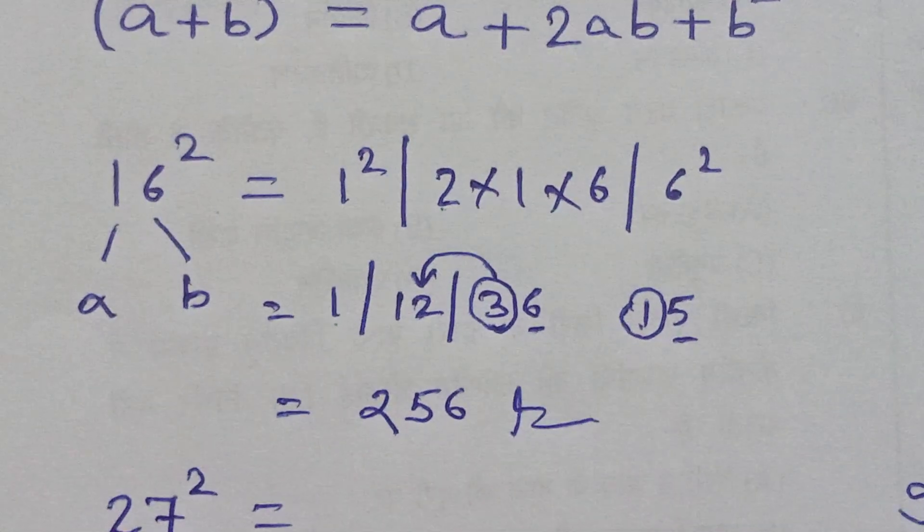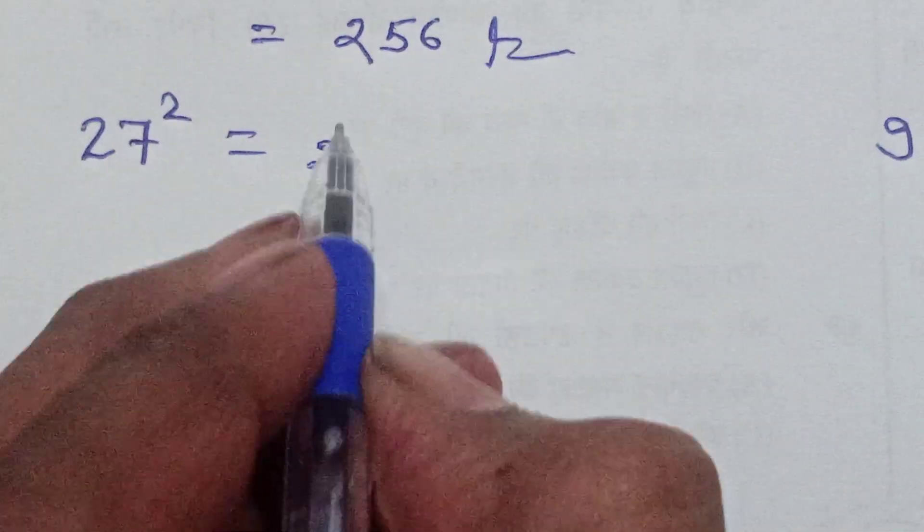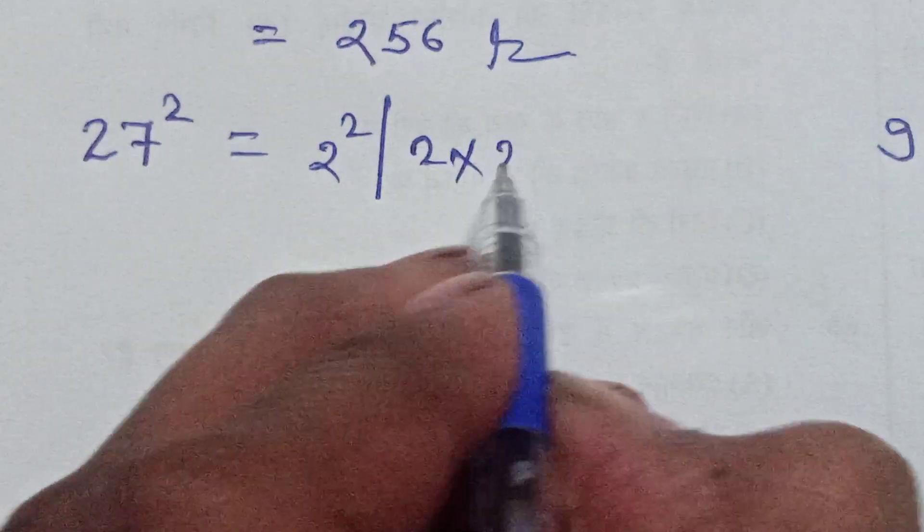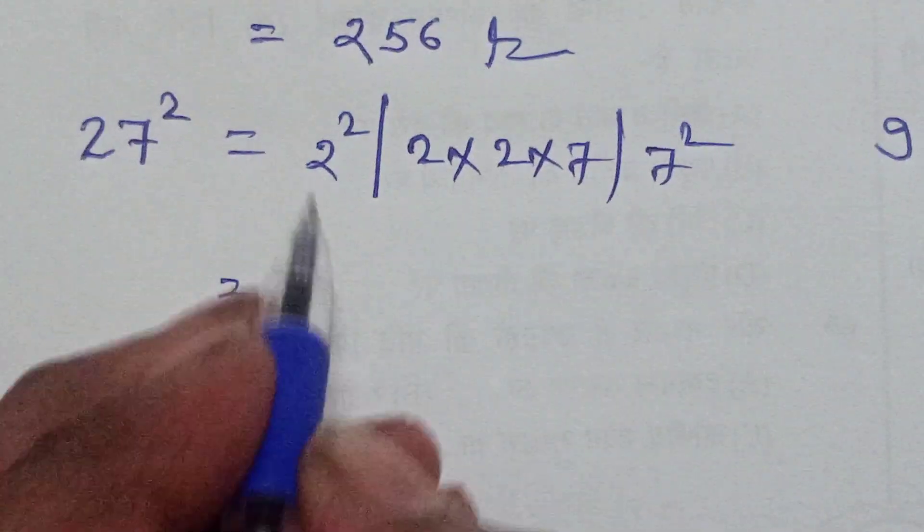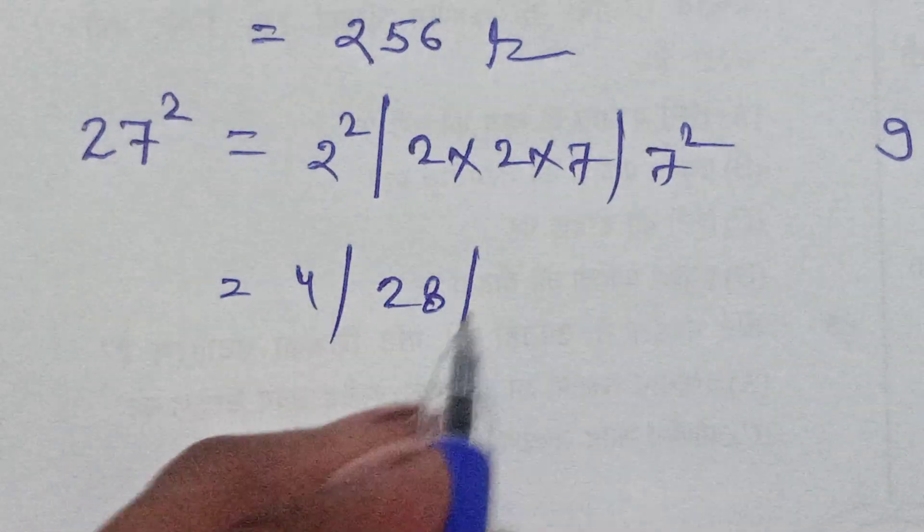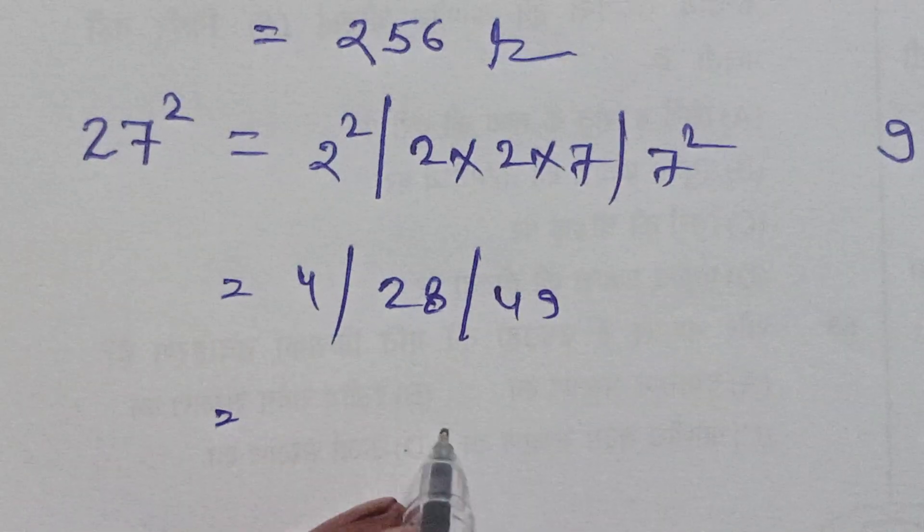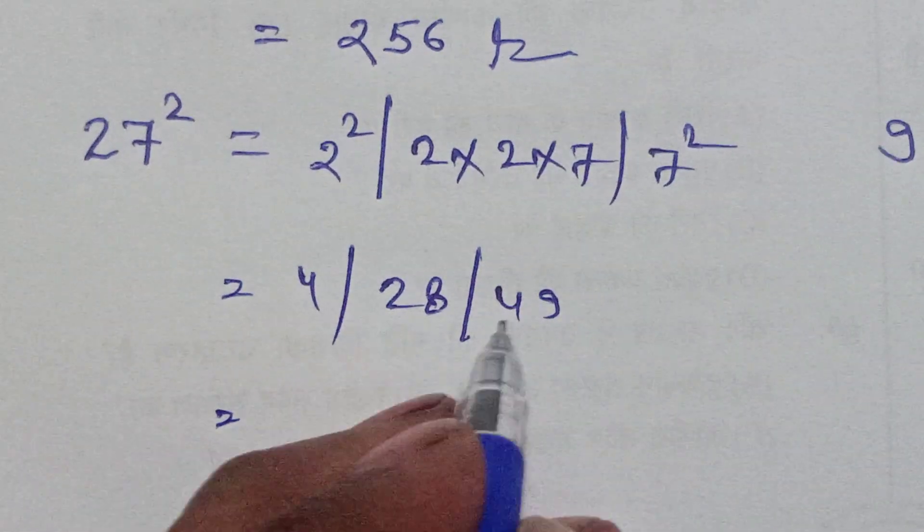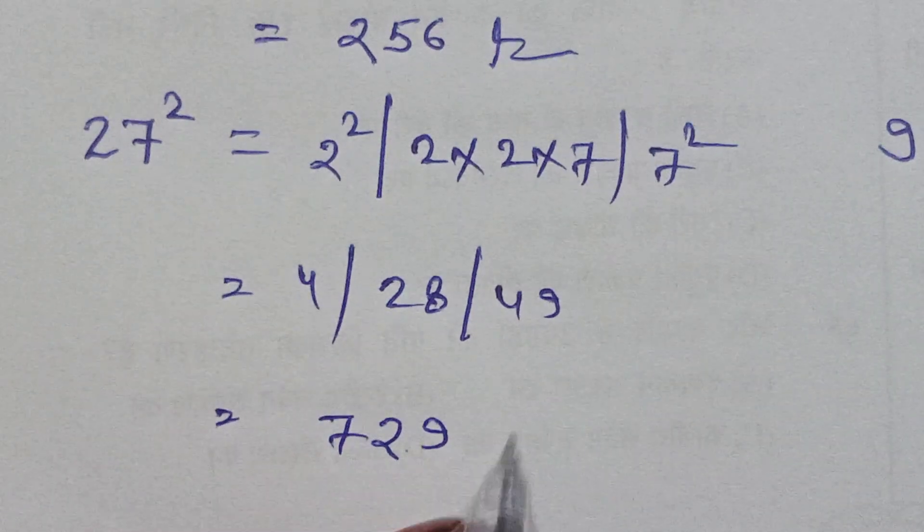So again we solve this. a square, 2ab, and b square. 4, 2 times 2 times 4, 4 times 7 is 28, 7 square is 49. Then writing answer 9, 4 add 8 is 12, 12 add 8 is 28, 32, 2 add 2 and 4 remaining, 7 add 3 is 4, right answer 729.